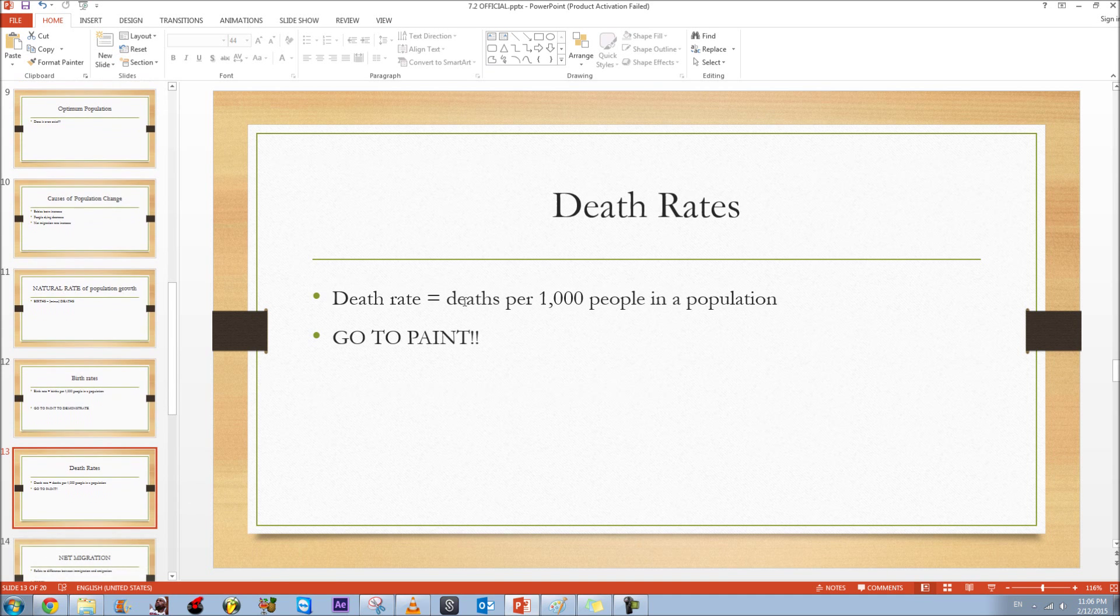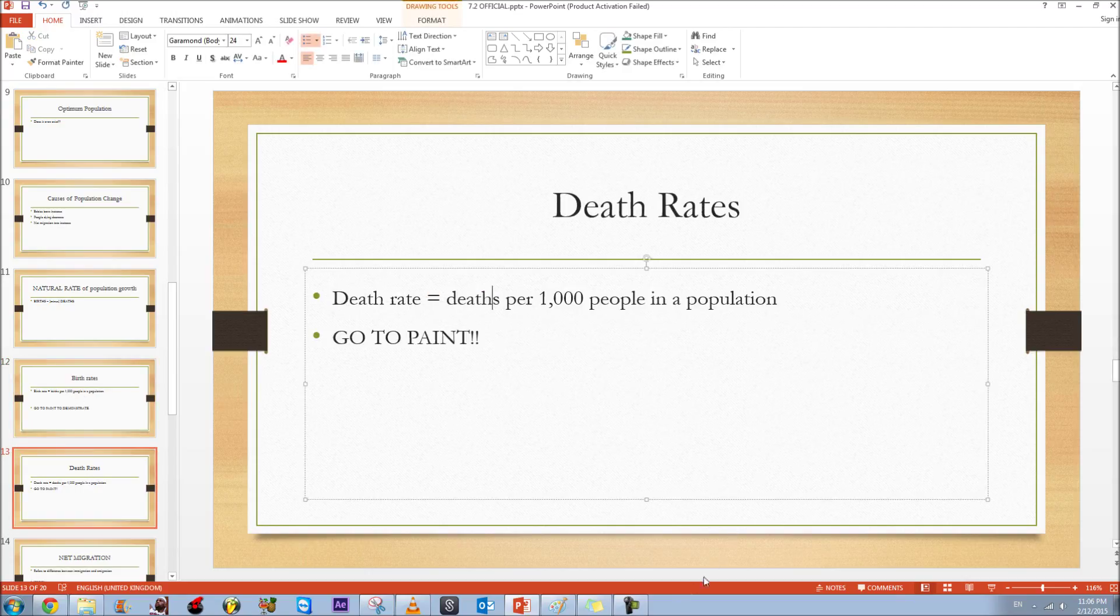Onto the next one which is death rates, a fairly similar concept as birth rates but it's death instead of birth. So it's the number of death per 1000 people in a population.